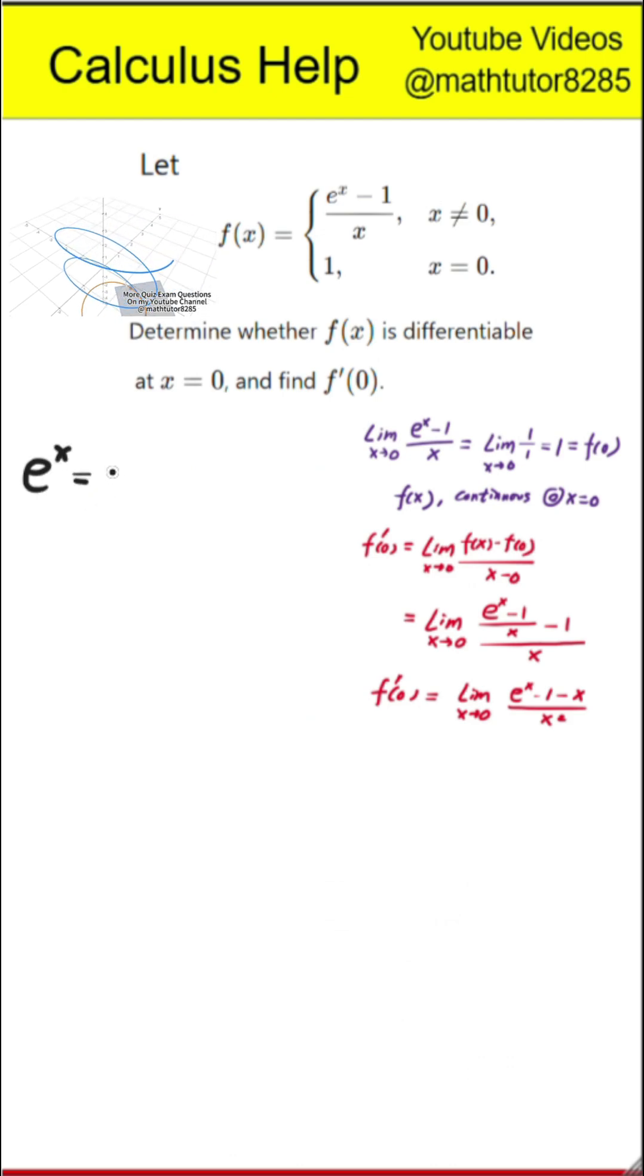Next step, evaluating the limit. We recall the power series expansion for e to the x. It equals 1 plus x plus x squared over 2 plus higher order terms.